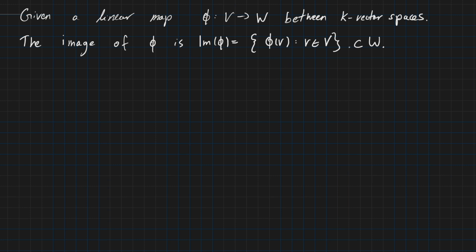This is always a subset of W because our map phi maps from V to W, so everything we receive is always part of W. We can ask ourselves whether, similar to the kernel we have seen in the last video, whether this image is also a subspace of W. If you haven't seen the last video where we looked at the kernel and proved that the kernel is a subspace, please go watch it. And now we are proving that the image is also a subspace.